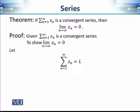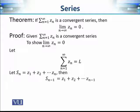Since the series is convergent, let's assume that its sum equals some complex number L. We define sₙ as the sequence of partial sums, which is the sum of the first n terms. This means sₙ₋₁ equals z₁ + z₂ + ... + zₙ₋₁, which is the sum of the first n−1 terms.